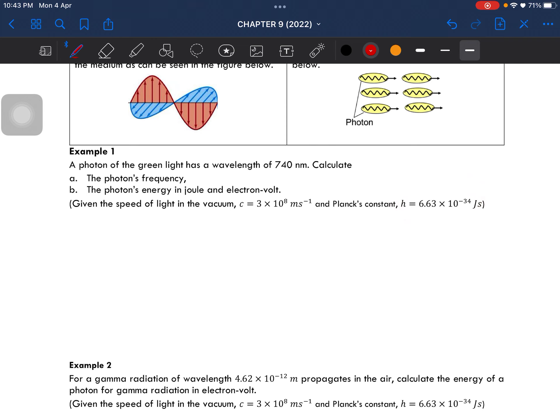So firstly, we will be using the speed of light formula, which is C equal to lambda f. So from here, we can then calculate the frequency, which is going to be equal to C over the wavelength. So this would give you 4.05 times 10 to the power of 14 hertz.